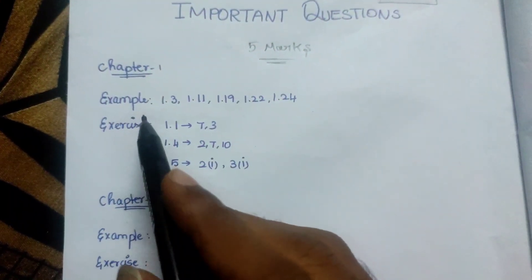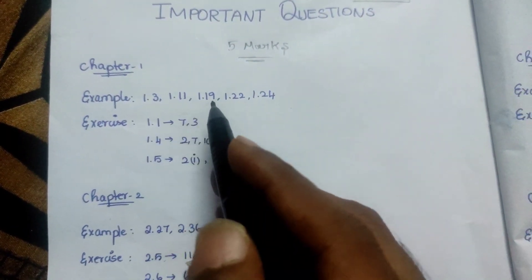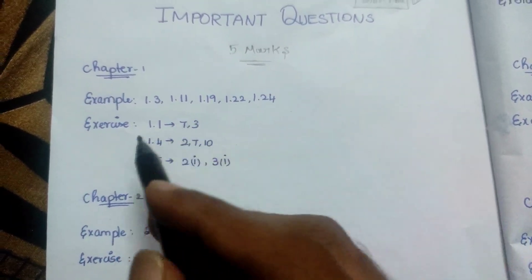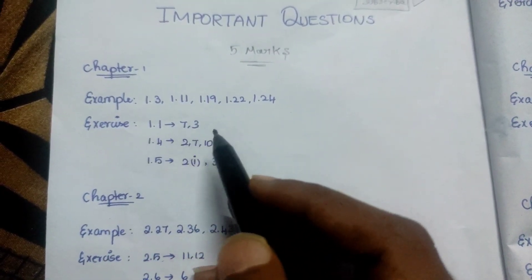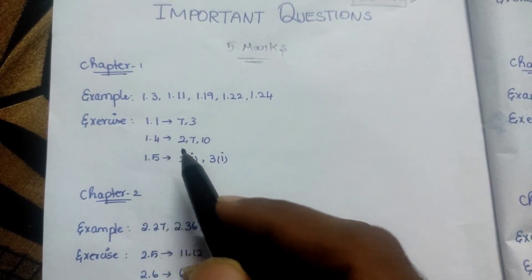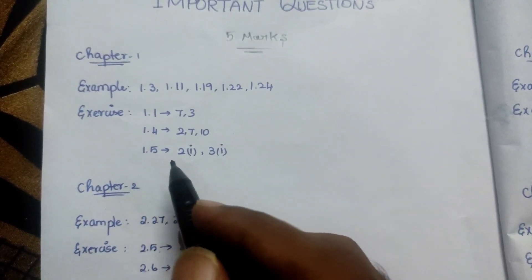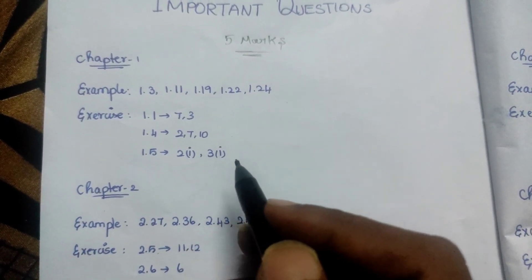Chapter 1: Example 1.3, 1.11, 1.19, 1.22, 1.24. Exercises 1.1, 1.73, 1.4, 2.710, 1.5, and 2.1st sum and 3.1st sum.